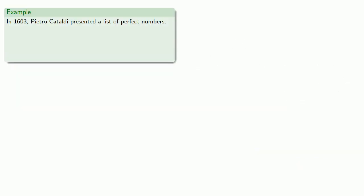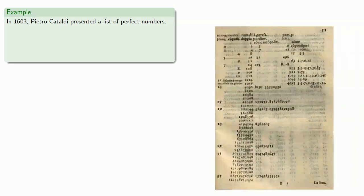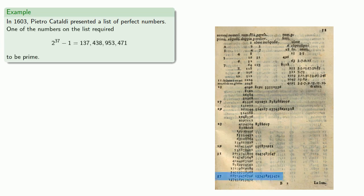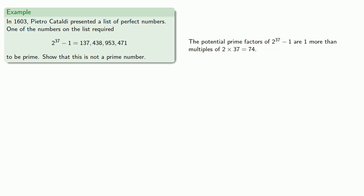For example, in 1603, Pietro Cataldi presented a list of perfect numbers, and one of the numbers on the list required 2^37 - 1 to be prime. It turns out that this number is not actually prime, but in fact it does have factors. So, the potential prime factors of 2^37 - 1 are one more than multiples of twice the root, 74.